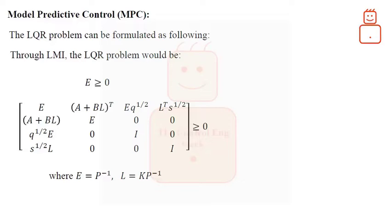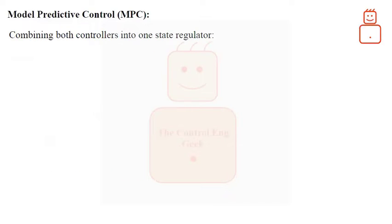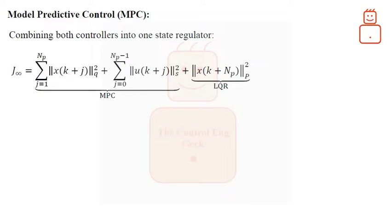We can combine both controllers into one state regulator in a very simple step as following. As we can write one cost function of both controllers, then we can stack both controllers cost. Where the weight on the states capital Q sub P simply constrains the stabilizing matrix P that has been computed from the LQR as a terminal weight.